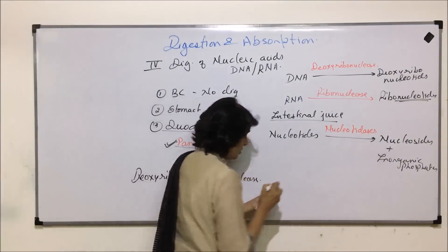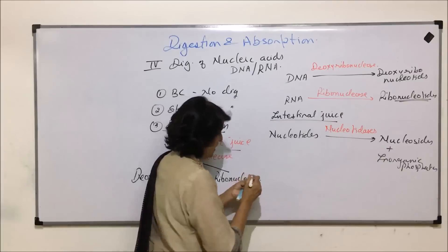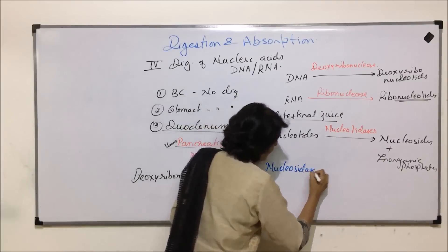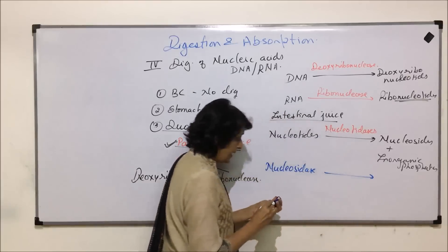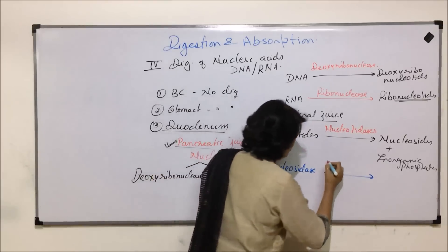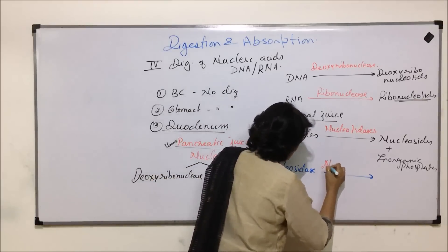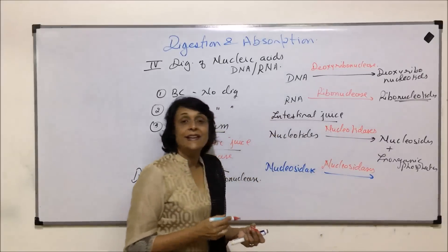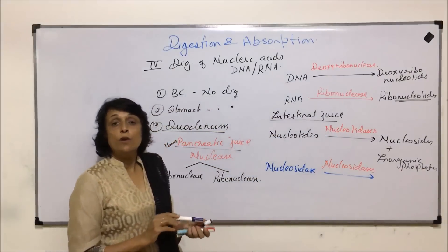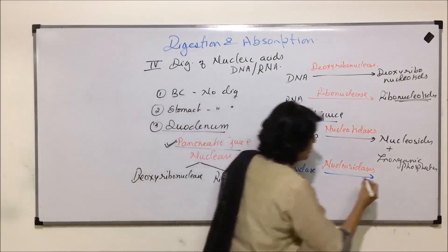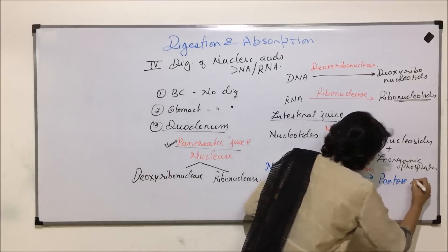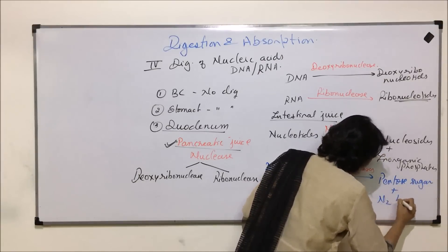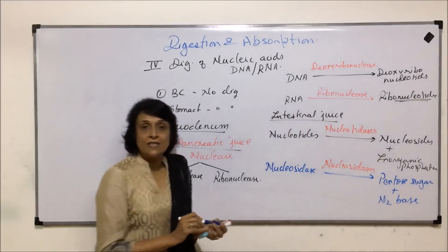Now this nucleoside is acted upon by another enzyme which is present in intestinal juice. It is called nucleosidase or nucleosidases. So they would break down this nucleoside to release pentose sugar plus nitrogen base, that is purines and pyrimidines.